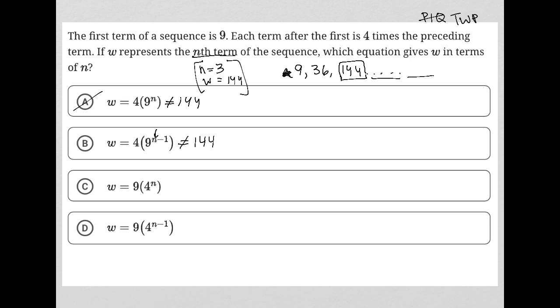How about 4 to the third power times 9? That does also not equal 144.